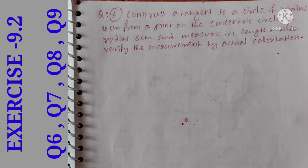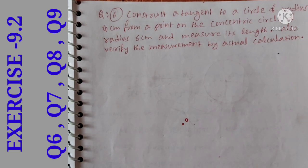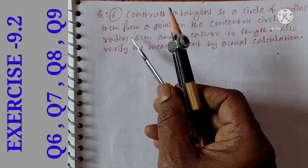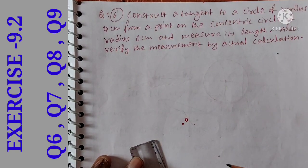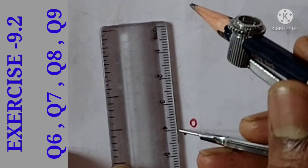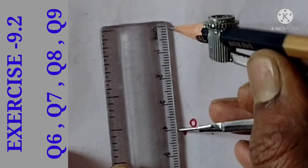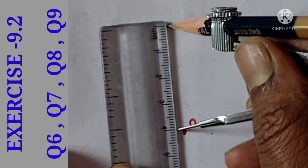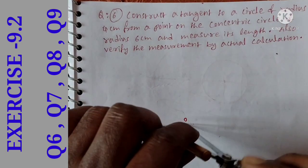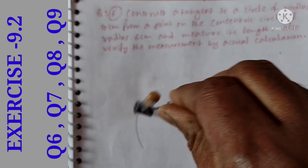You can verify the measurement by actual calculation. First, we will draw center M. The concentric circles are drawn with radii 4 cm and 6 cm — two circles. We will draw the 4 cm circle first.